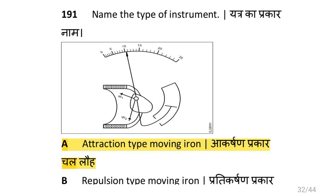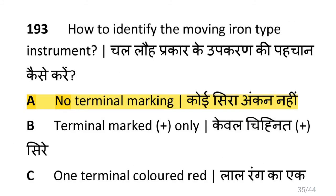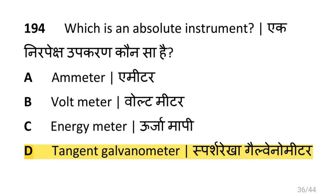Name the type of instrument shown. That is attraction type moving iron. Which meter is used to measure the revolutions per minute of a motor? That is tachometer. How to identify a moving iron type instrument? It has no terminal marking. Which is an absolute instrument? That is tangent galvanometer.